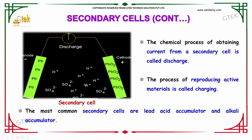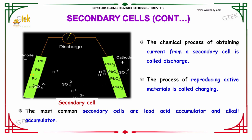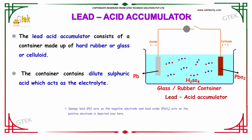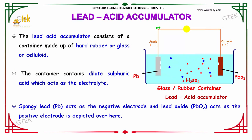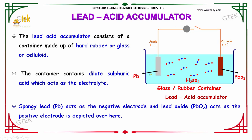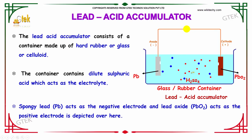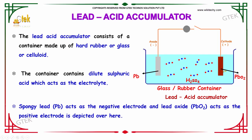The most common secondary cells are the lead-acid accumulator and the alkali accumulator. The lead-acid accumulator consists of a container made up of hard rubber, glass, or cellulite. The container contains dilute sulfuric acid which acts as the electrolyte. Spongy lead acts as the negative electrode and lead oxide acts as the positive electrode.